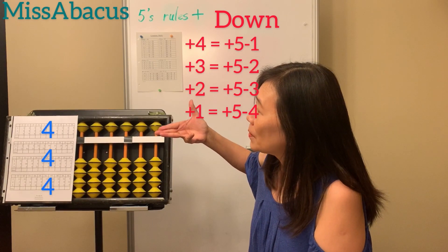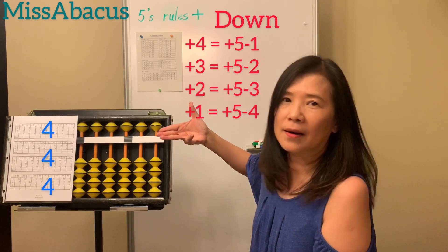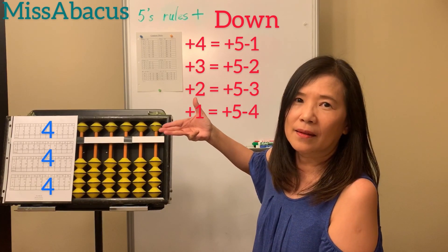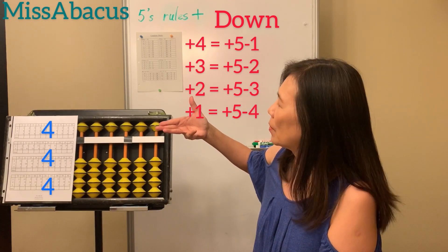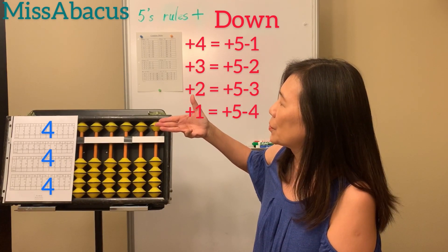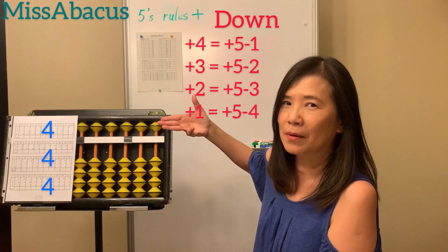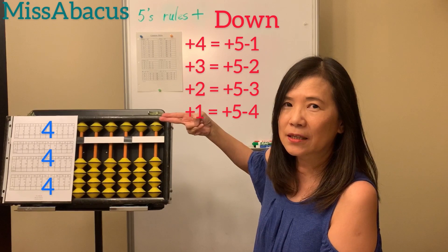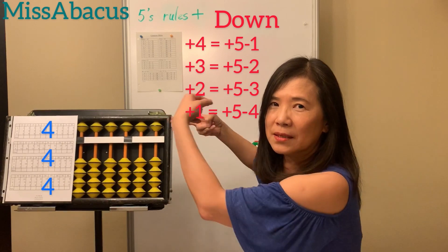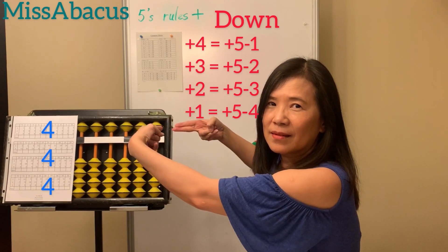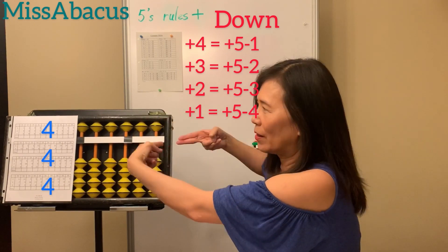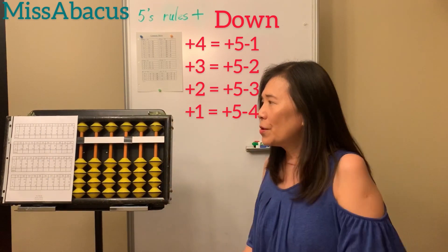Number ten: four plus four, four plus four — five minus one is four. Last number plus four again — no more, only one left. So tens rule: minus six plus ten. Answer twelve.